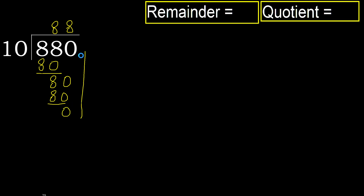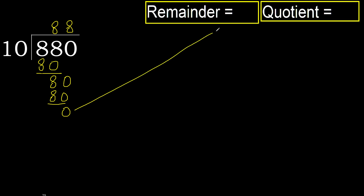Next — that is not a number, therefore, finish it. Okay, 880 divided by 10 is 88.